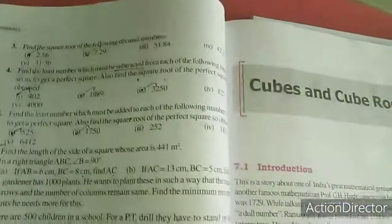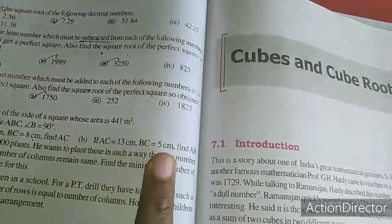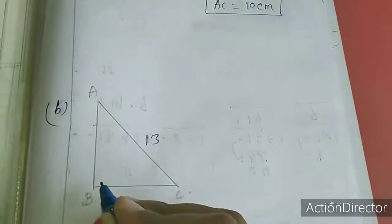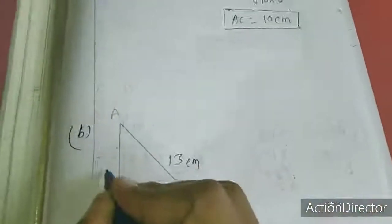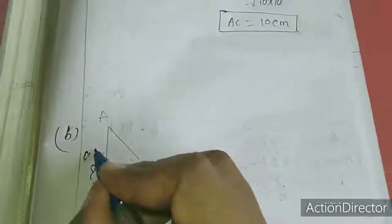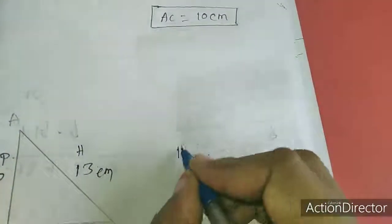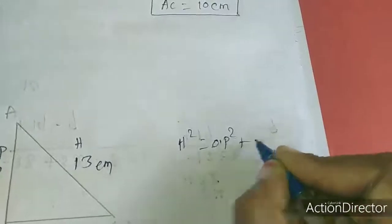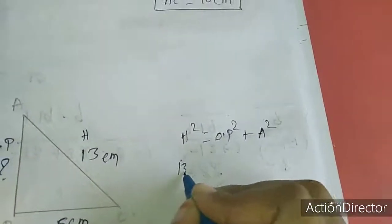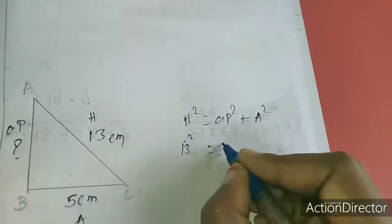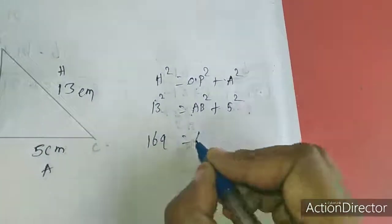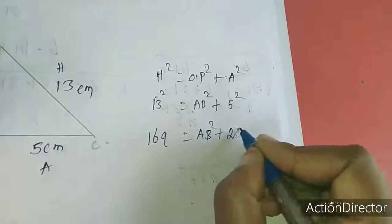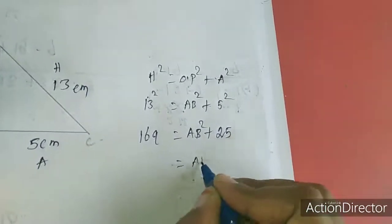This is the value they are asking. Now we will move to the second, B sum. See here, in B sum, AC equal to 13, BC equal to 5. This side we want to find out, this is the opposite. This is hypotenuse, this is adjacent.